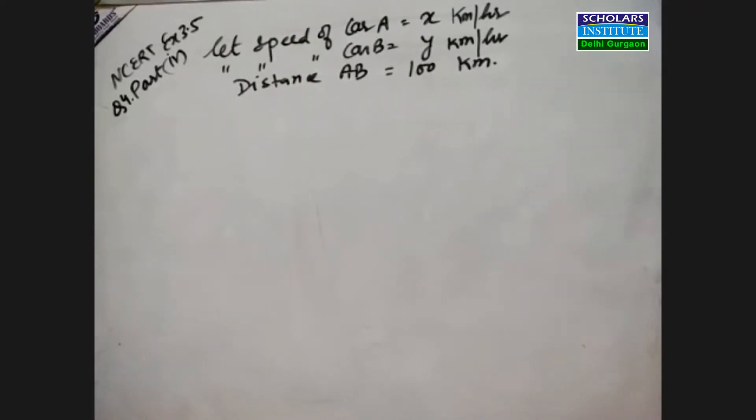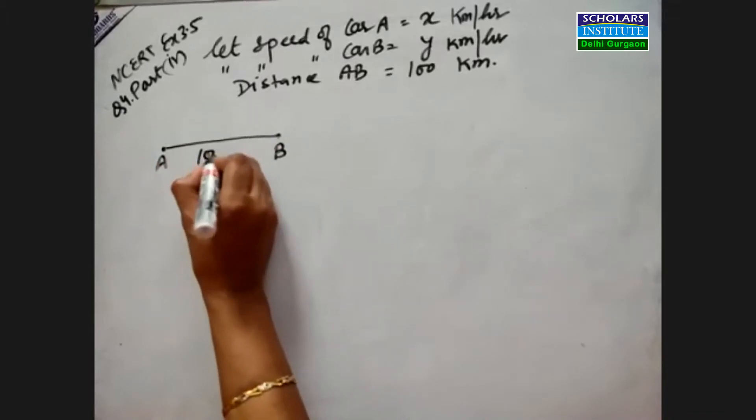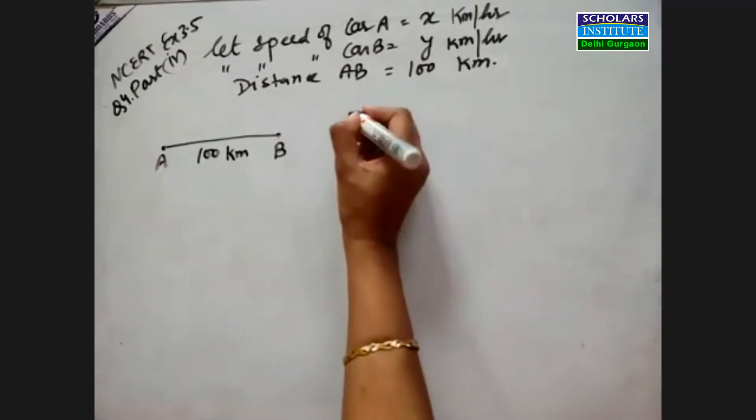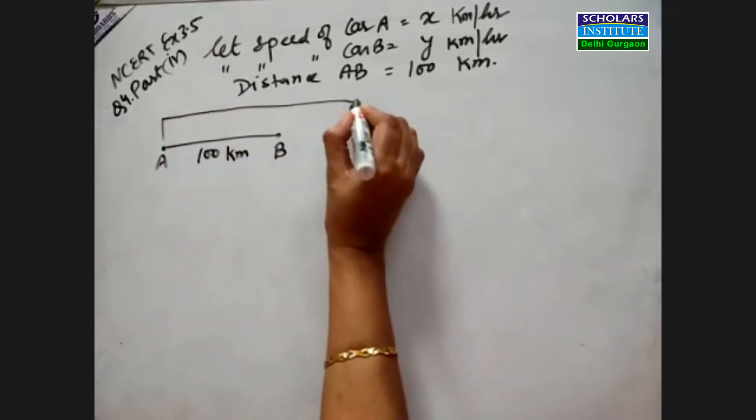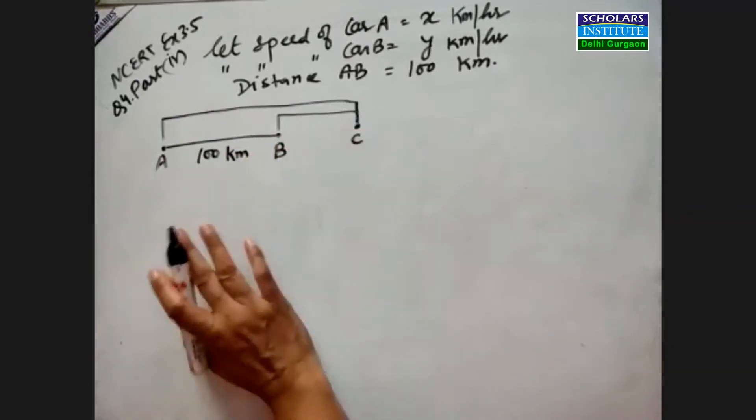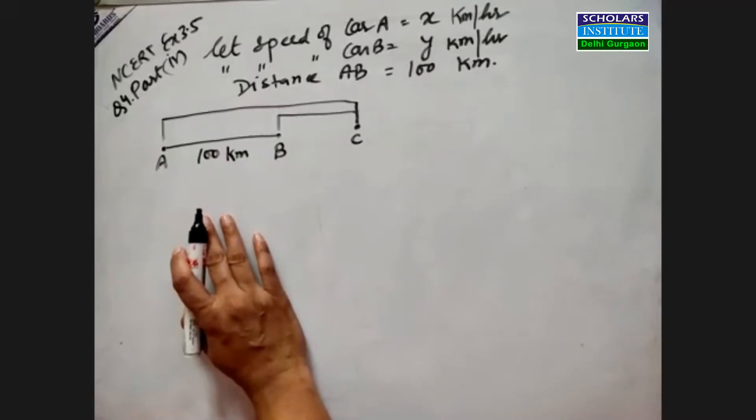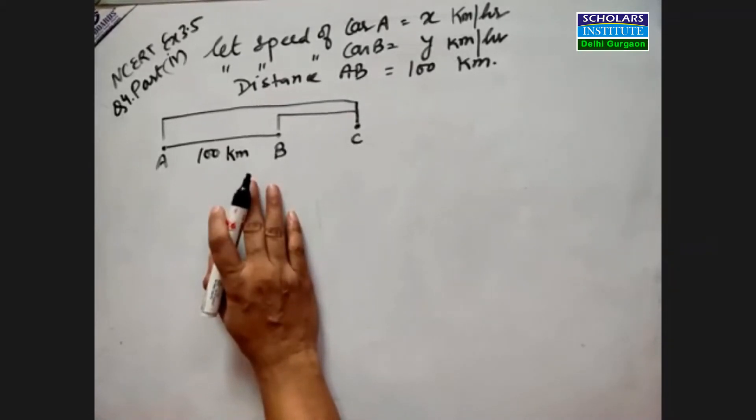For the first case, if they travel in the same direction, both A and B cars are on a highway going in one direction. Let's assume they're going to the right side. They meet at point C in 5 hours. A is much faster than B because it's covering more distance in the same time. This is case one, and we'll make one equation from here.